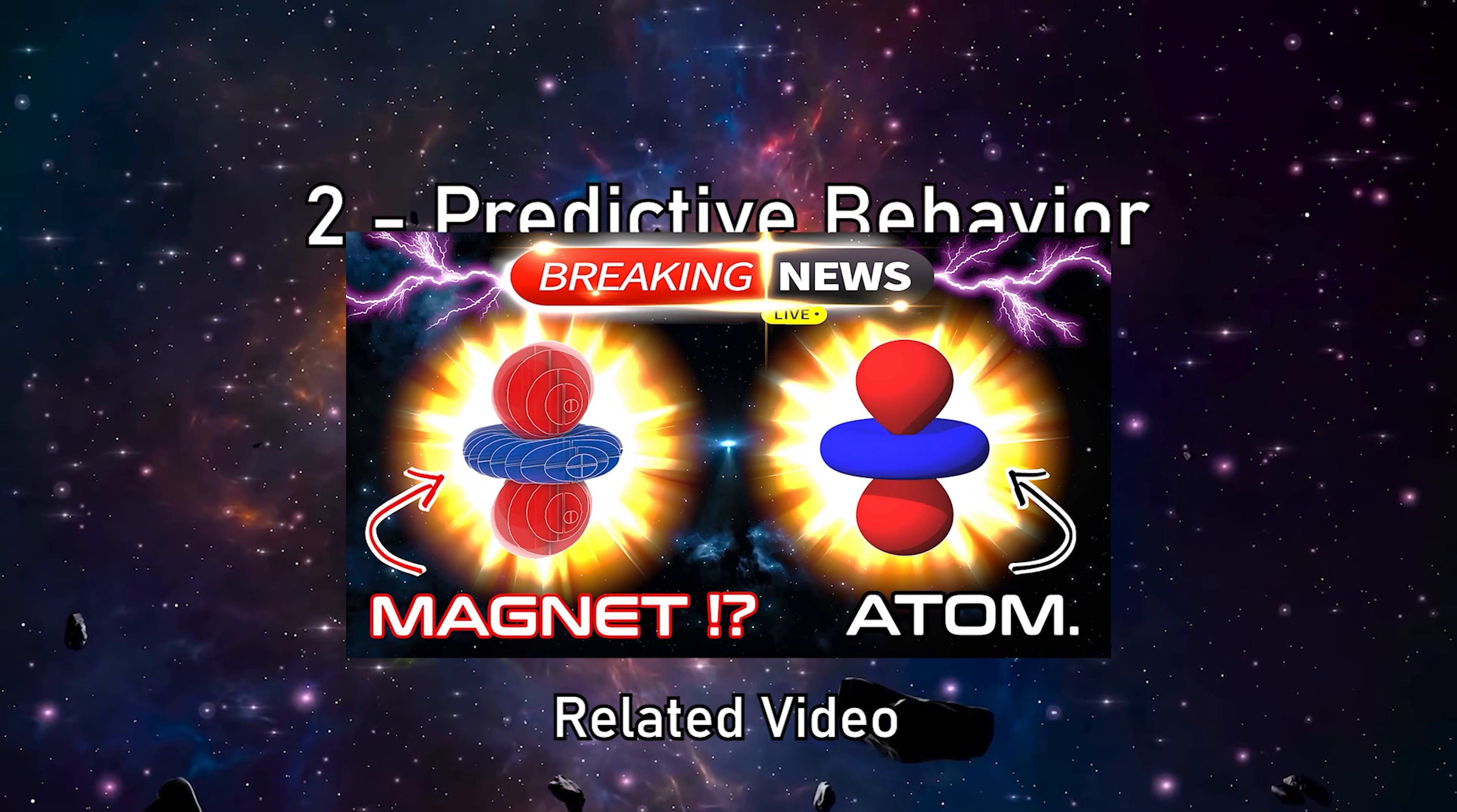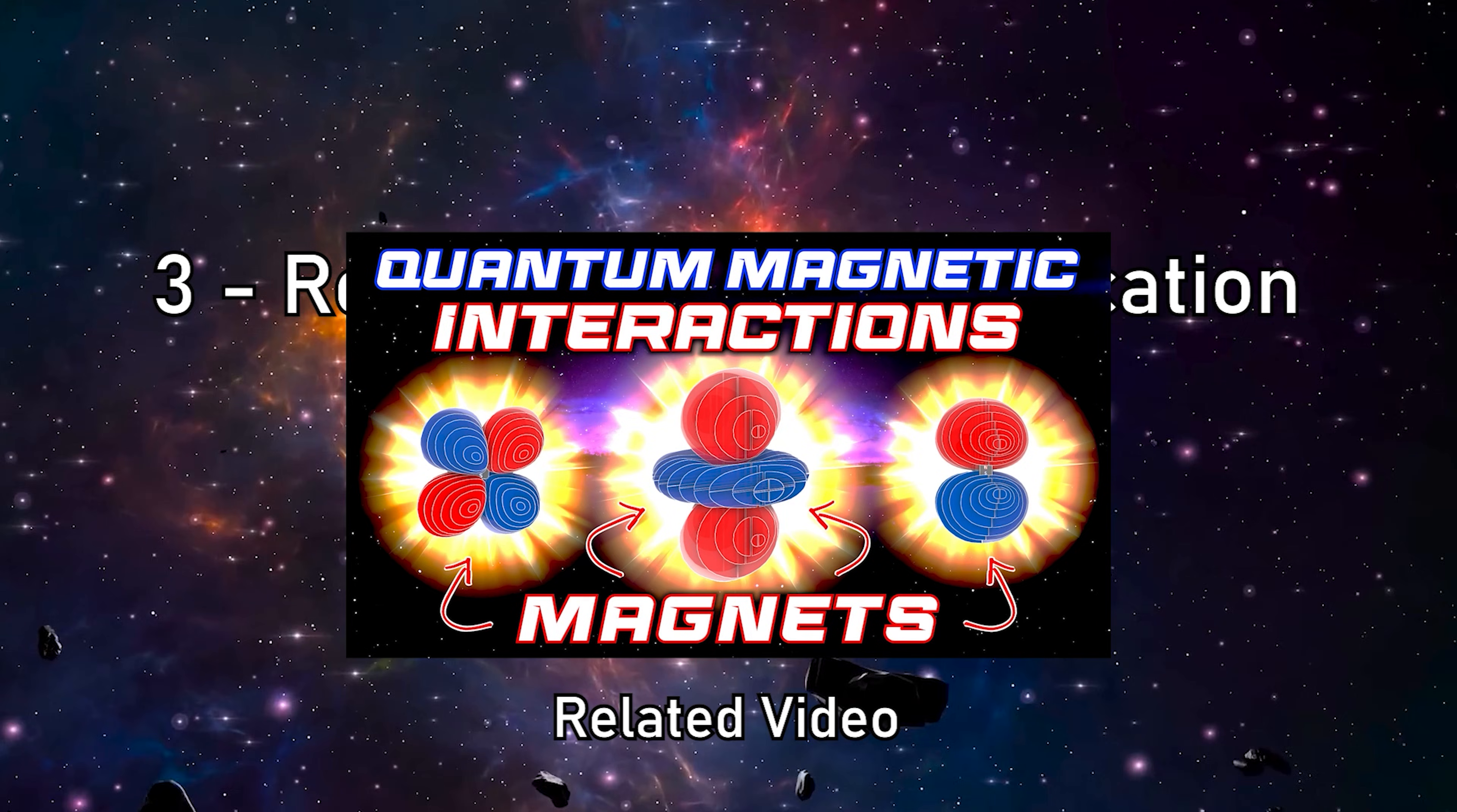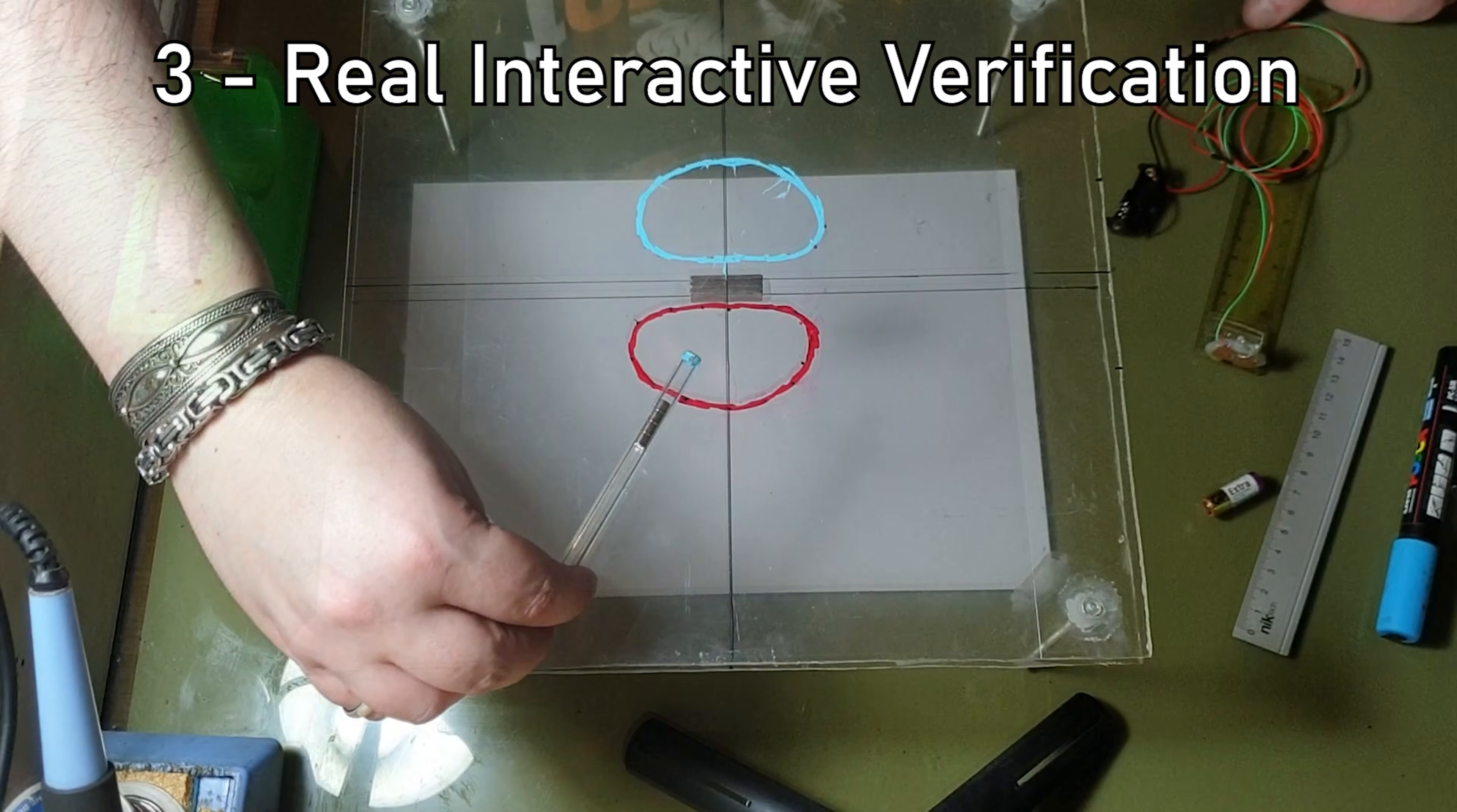2. Predictive Behavior. Each measurement does not represent the current state of the magnetic field. It anticipates a probable future interaction. The sensor does not simply describe what is present. It responds to what would happen if a second dipole were introduced. This is predictive behavior, not purely descriptive. 3. Real Interactive Verification. When the sensor is replaced by a real magnet, the interaction follows the prediction. Equilibrium positions, angles, and privileged regions match what was previously measured. Conceptually, this is analogous to what happens in the atomic world, where real interactions follow the probability distributions predicted by the Schrodinger equation.